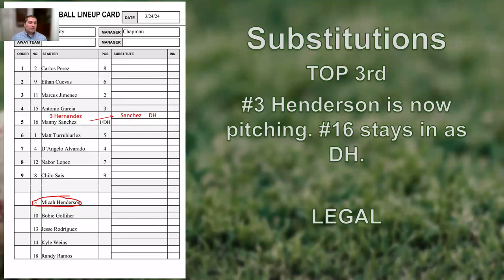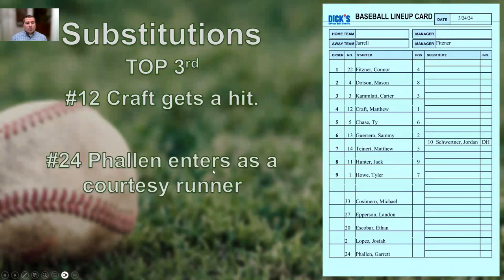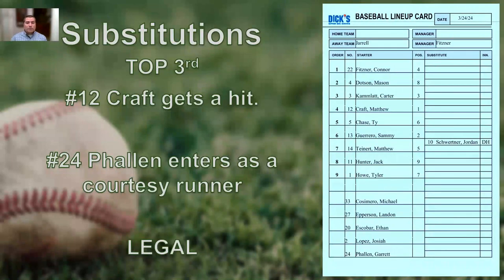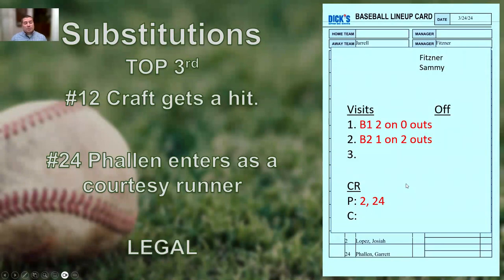So number 3, Henderson, comes into the game and number 16, Sanchez, stays in as the designated hitter. This is legal. I take my red pen, draw an arrow over to Sanchez and rewrite his name to separate the two spots on the lineup card. Circle Hernandez off the sub list to show he's in the game. Now in the top of the third, number 12, Kraft, again gets a hit. Coach wants number 24, Fallon, to enter as a courtesy runner for the pitcher — absolutely legal. Just put 24 down by the P on your card.